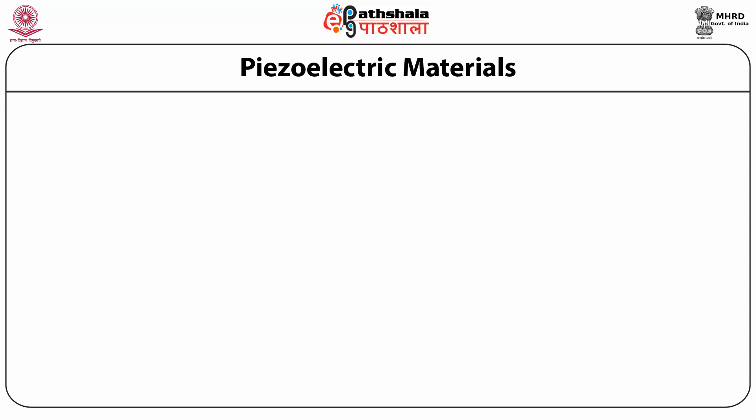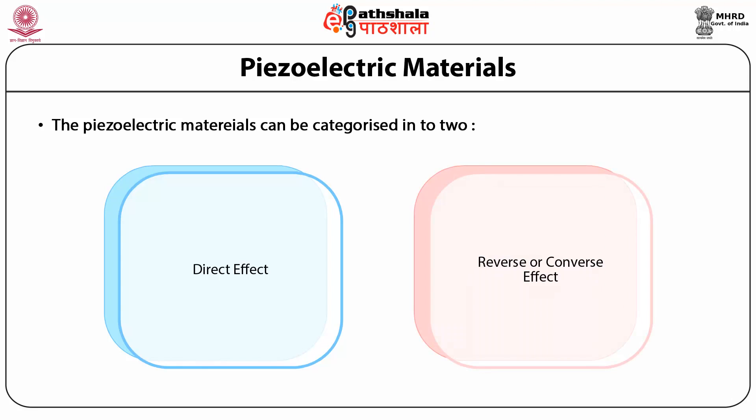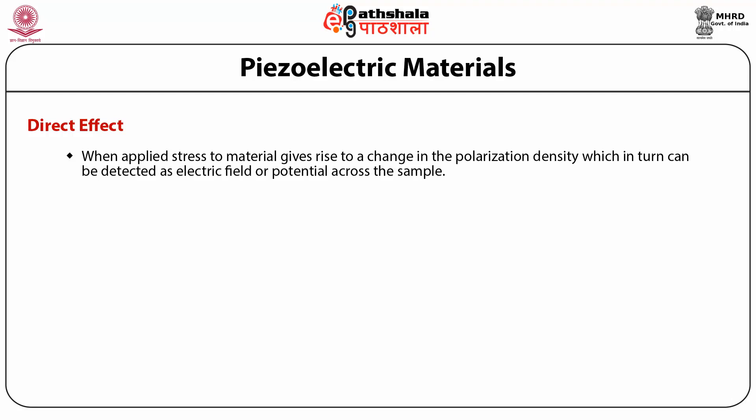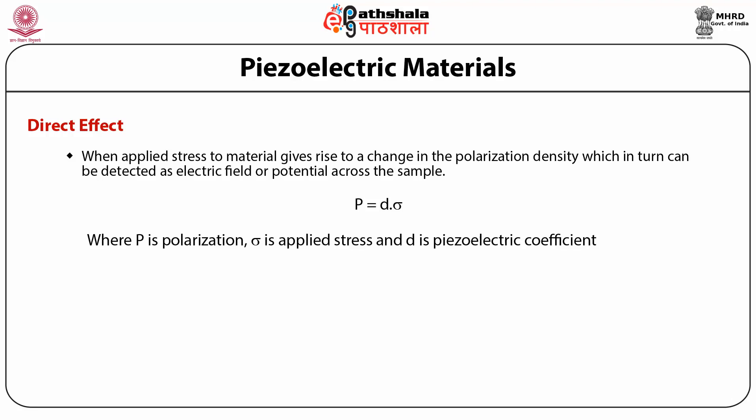Piezoelectric materials can be categorized into two types: direct and indirect (or reverse/converse). In the direct piezoelectric effect, applied stress to materials gives rise to a change in polarization density, which in turn can be detected as an electric field or potential across the sample. The polarization is directly proportional to the applied stress, described by the equation P = D·σ, where P is polarization, σ is applied stress, and D is the piezoelectric coefficient.